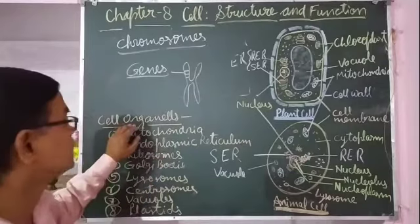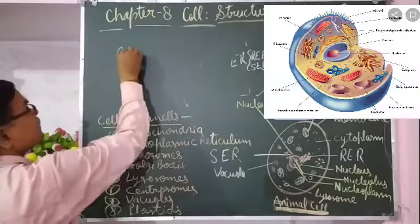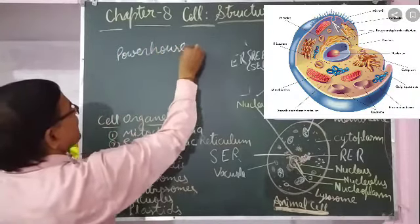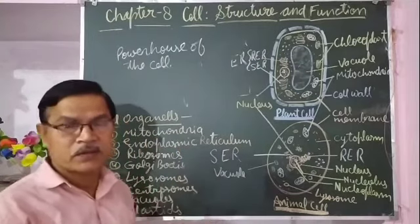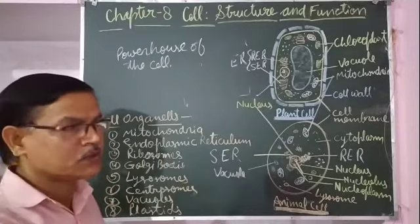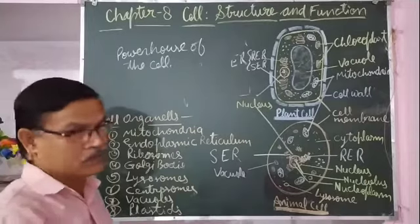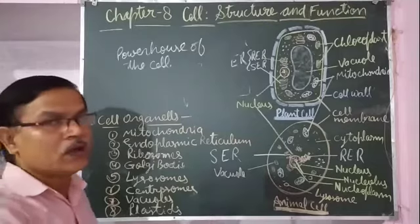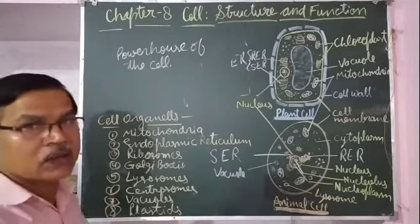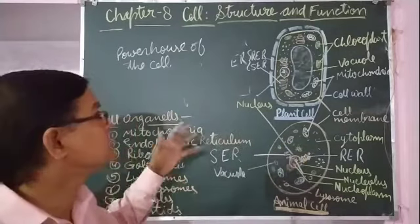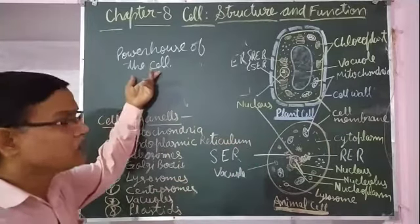Now we will discuss cell organelles one by one. The first one is mitochondria. Mitochondria is also called the powerhouse of the cell. Whatever food we take, after absorption it goes into the cells. In the cells, mitochondria is present — food goes there, oxygen also reaches, and by the oxidation of food — meaning oxidation of glucose — energy is released. That is cellular respiration, which takes place in mitochondria. The energy produced is used by the cell and body, so it is called the powerhouse of the cell. It is found in both animal and plant cells.